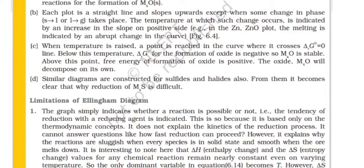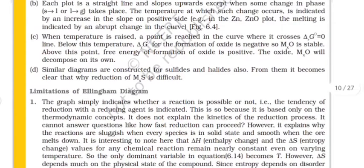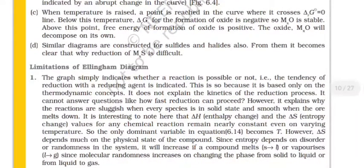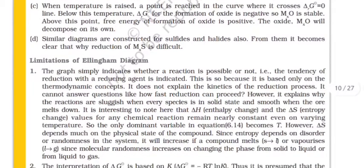Each plot is a straight line and slopes upward until some changes in phase takes place. The temperature at which the changes occur is indicated by an increase in the slope on the positive side. When temperature is raised a point is reached in the curve where it crosses ΔG = 0 line. Below this temperature ΔG for the formation of oxide is negative so MxO is stable. Above this free energy of formation of oxide is positive. Therefore the oxide will decompose on its own.